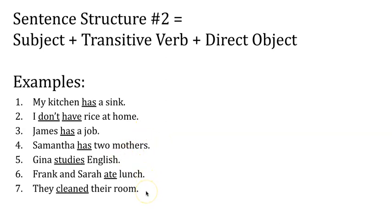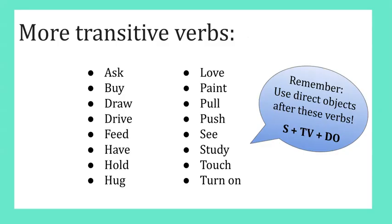Sentences two, three, and four also use the verb 'have', but sentences five, six, and seven use other examples of transitive verbs. Pause the video here to study these examples. Here are more examples of transitive verbs — use these verbs to make sentences. Remember to use this structure: start with the subject, then use the transitive verb, and add a direct object after. Pause the video here to take notes.